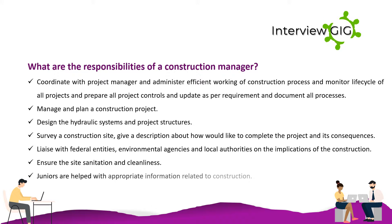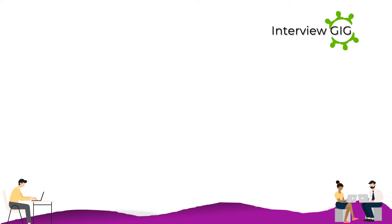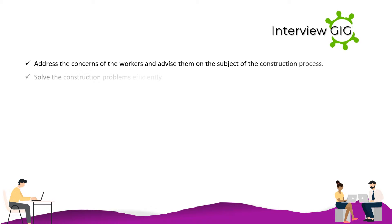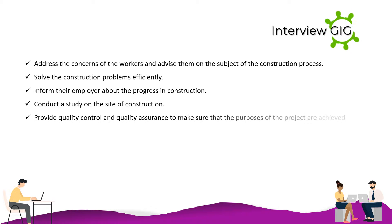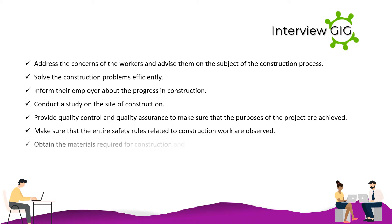Liaise with federal entities, environmental agencies and local authorities on the implications of the construction. Ensure site sanitation and cleanliness. Assist juniors with appropriate information related to construction. Address the concerns of workers and advise them on the construction process. Solve construction problems efficiently. Inform the employer about progress in construction. Conduct a study on the site of construction. Provide quality control and quality assurance to make sure the purposes of the project are achieved.